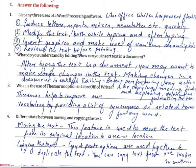Differentiate between moving and copying the text. Moving the text is used to move the text from its original location to a new location. Copying the text: copy and paste options are used together to duplicate the text. You can copy text from one location to another.